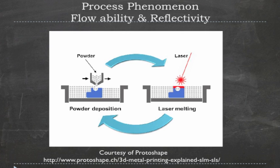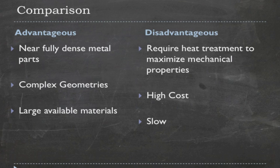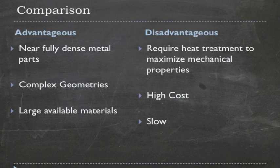The advantages of the selective laser melting process are: first, it can create nearly fully dense metal parts at around 99.9%. Second, you can create complex geometries that you can't possibly create using casting or machining. Third, a large library of materials is available for the SLM process, since it is very similar to the SLS process — just with a higher-powered laser to melt metal.